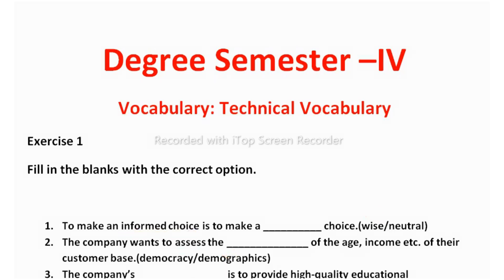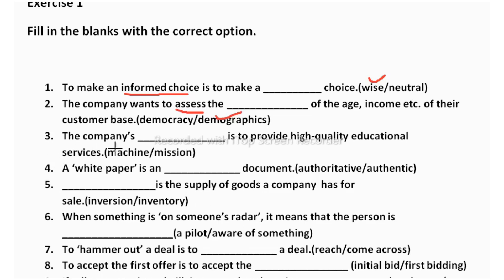The third one: the company's blank is to provide high quality educational service — machine or mission? Machine does not fit. The company's mission means the company's goal is to provide high quality education service. So mission is the correct answer.